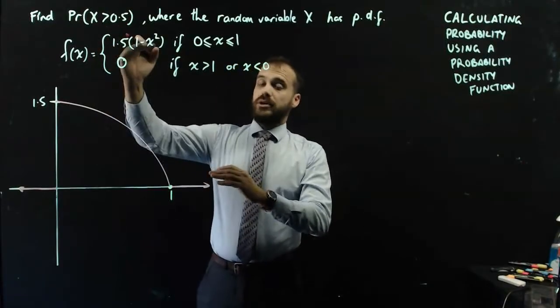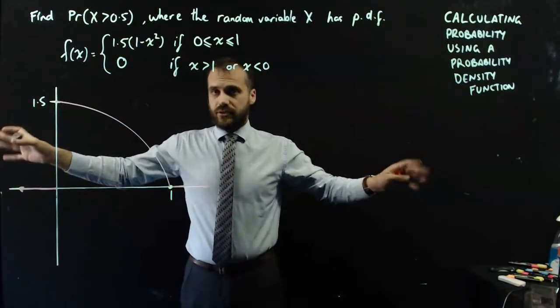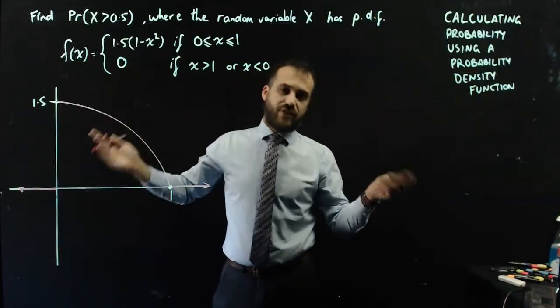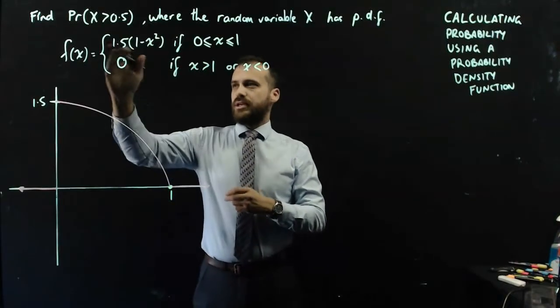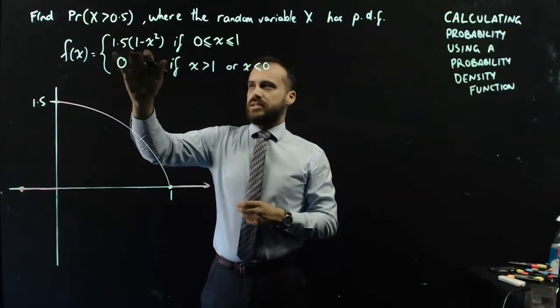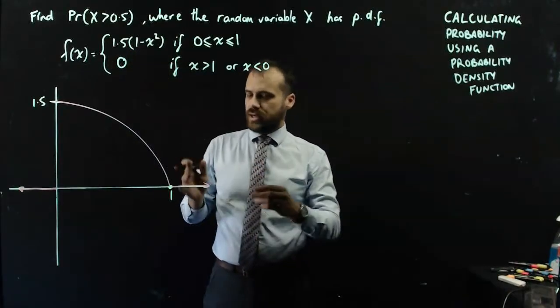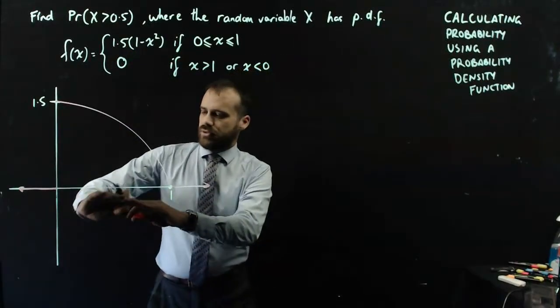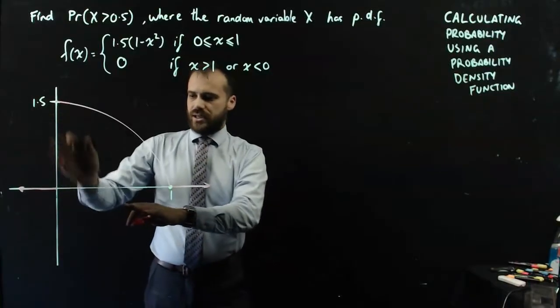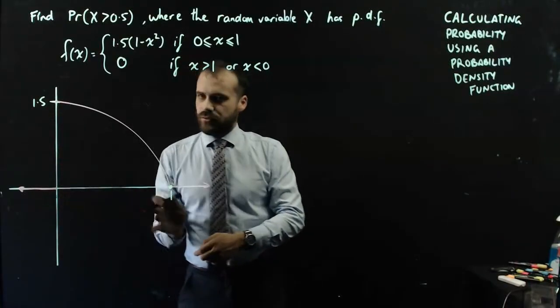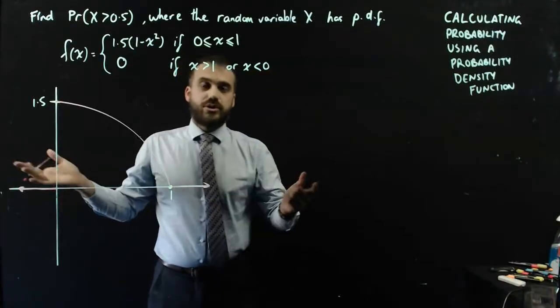We create a piecewise because we need the function to go on forever in both directions. That's just kind of a convention of a probability density function. But really, the only bit we're interested in is this particular bit here. Now, what do this bit and this bit represent? This bit represents the scores.